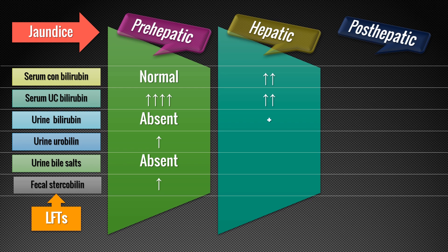Due to intra-hepatic obstruction in hepatic jaundice, bilirubin is found in the urine. Urine urobilin is decreased, and urine bile salts are increased — because bile salts are regurgitated back into circulation due to obstruction within the liver, filtered by the kidneys, and excreted in the urine. For the same reason, stercobilin in the feces is decreased. These are the features of hepatocellular jaundice.